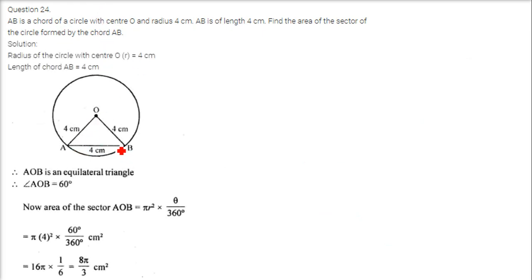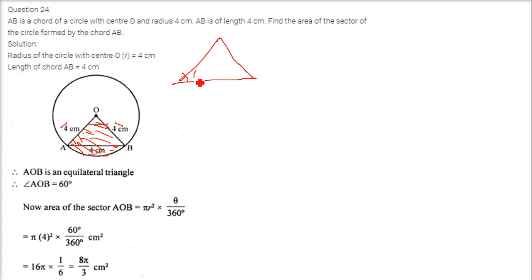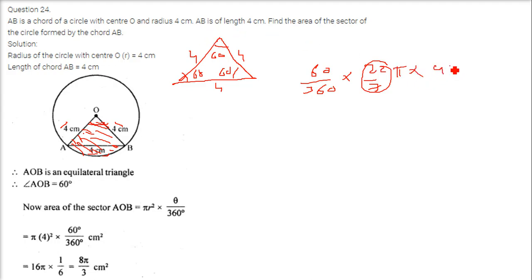AB is a chord of a circle with center O and radius 4 cm. AB is also 4 cm, so all sides of triangle OAB are equal — it is an equilateral triangle, meaning all angles are 60 degrees. To find the area of the sector formed by chord AB, we use area = (60/360) × πr² = (60/360) × (22/7) × 4 × 4 = 8π/3 cm².